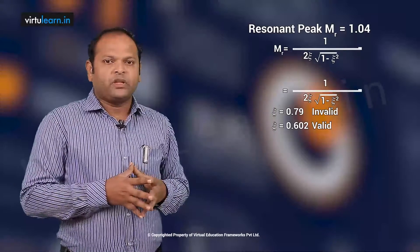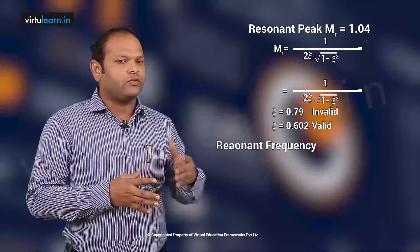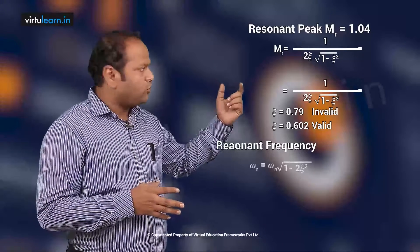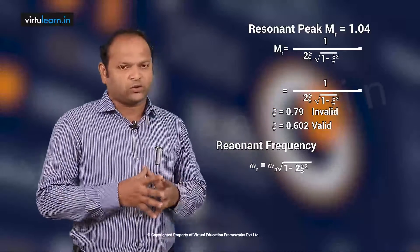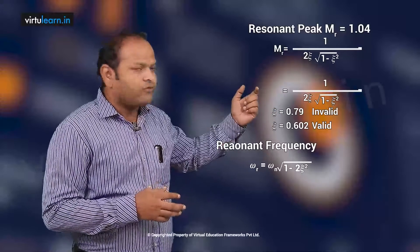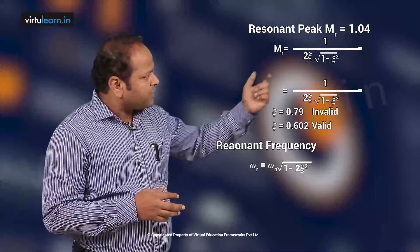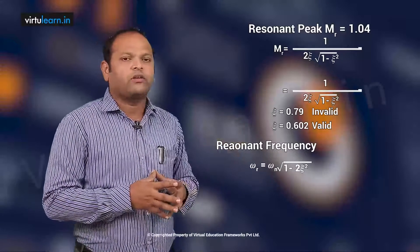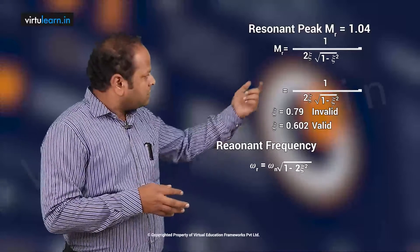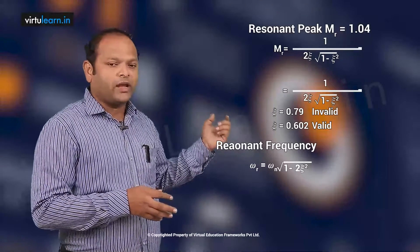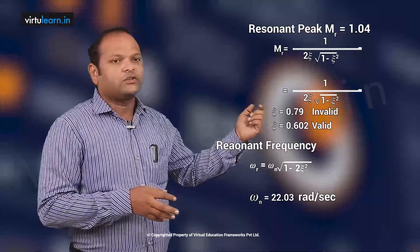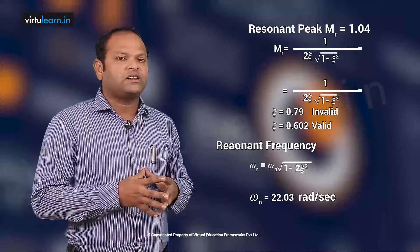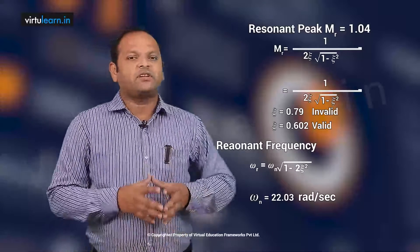With ζ = 0.602 and using the resonant frequency formula ωr = ωn√(1 − 2ζ²), we can find ωn. Substituting ωr = 11.55 and ζ = 0.602, we get ωn ≈ 22.03 radians per second.